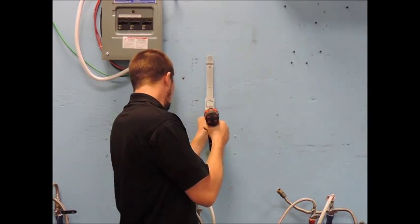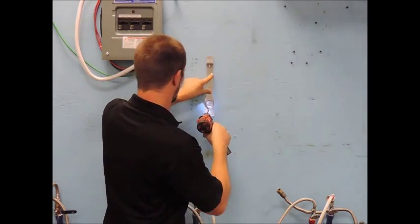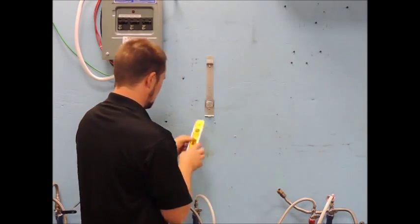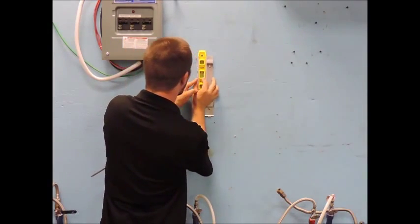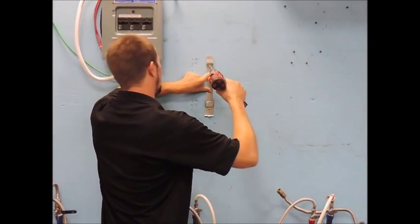First, mount the bracket vertically on a flat surface, i.e. a board or a wall, larger than the unit itself. Using a level will help keep the heater bracket straight. Make sure the bracket is secure by utilizing a stud or the provided wall anchors.